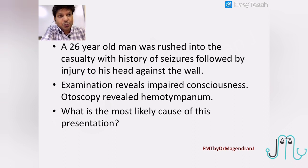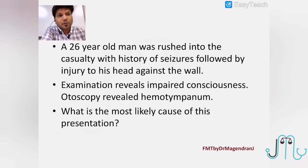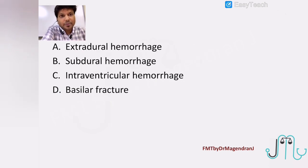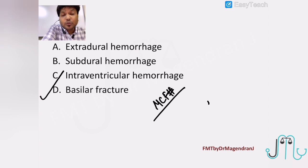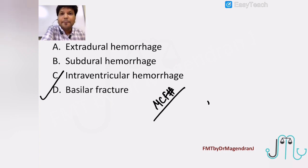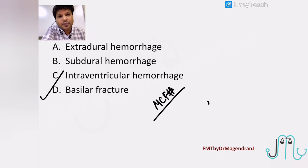A 26-year-old man was rushed to casualty with seizures followed by injury to the head against the wall. Examination reveals impaired consciousness; otoscopy revealed hemotympanum. The most likely cause is basilar fracture, particularly middle cranial fossa fracture. Hemotympanum, bleeding from the ear, CSF otorrhea, and Battle's sign — all these signs suggest middle cranial fossa fracture. On the converse, if the person presents with black eye, bleeding from the nose, and CSF rhinorrhea, you can think of anterior cranial fossa fracture. But hemotympanum more likely points toward middle cranial fossa fracture.